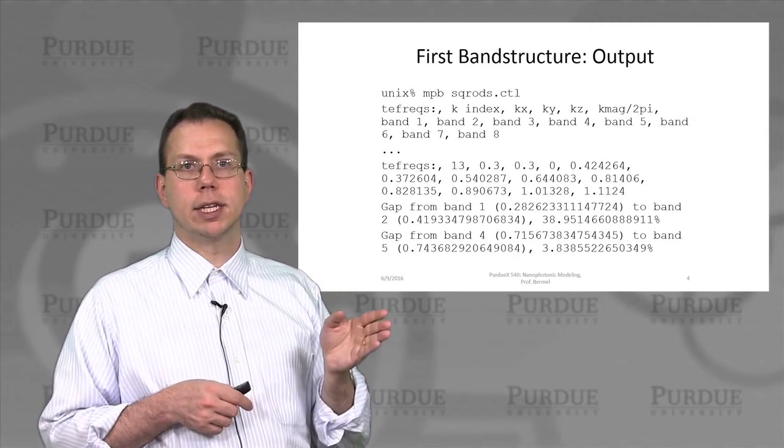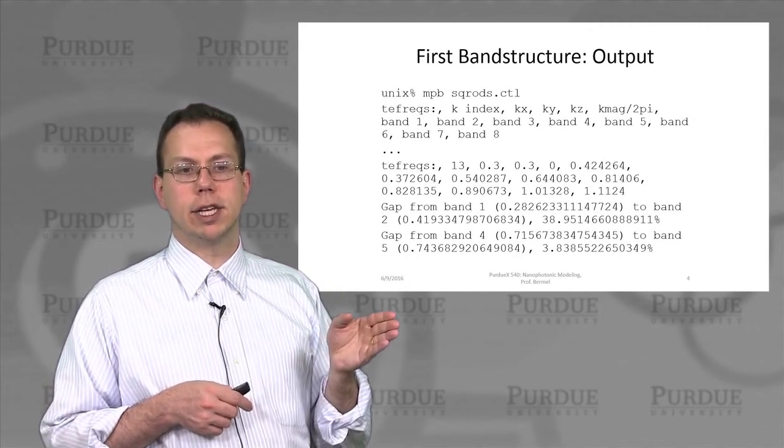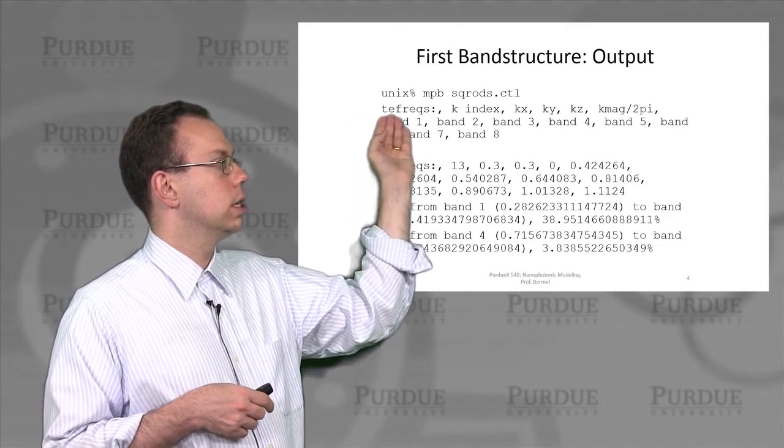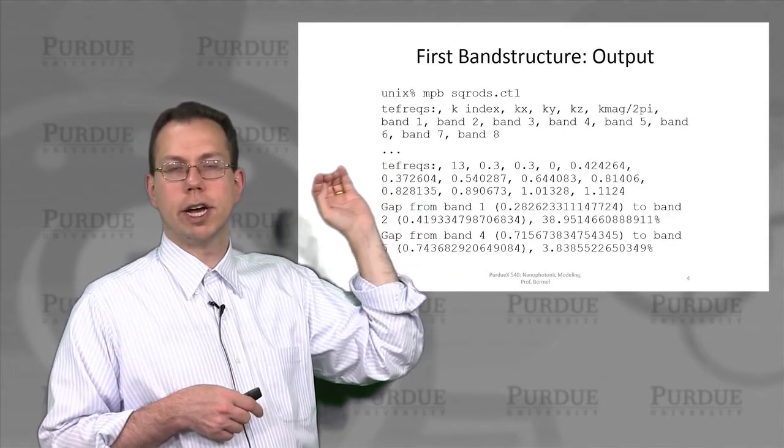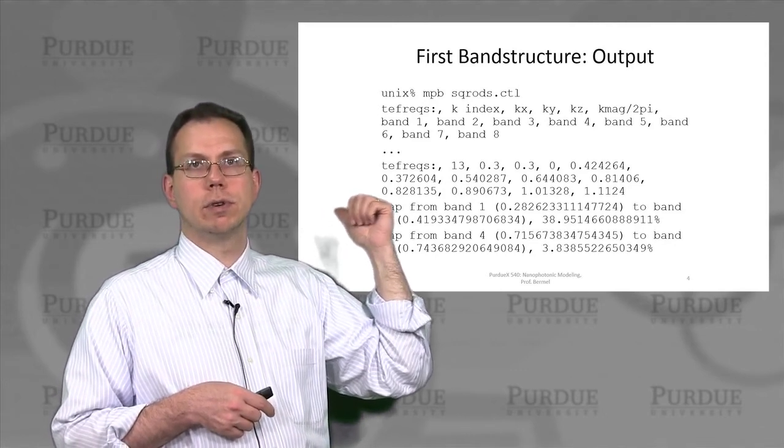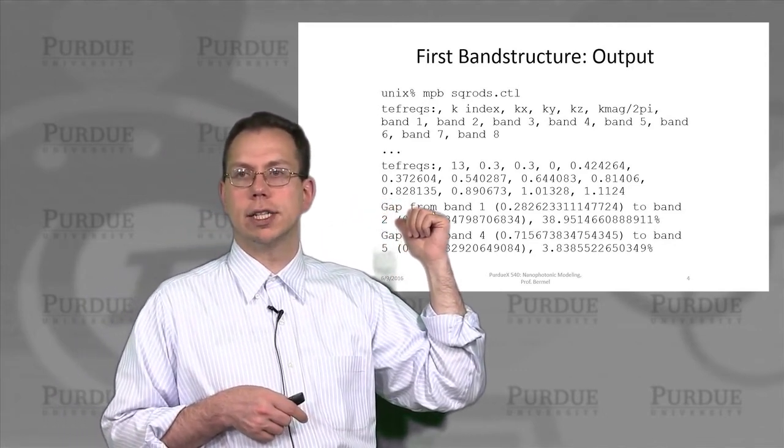Then if we run this calculation using a command line interface, we type MPB, which is the name of the executable, and then the name of the control file which we previously showed you, which we'll call square rods or sq rods dot ctl.